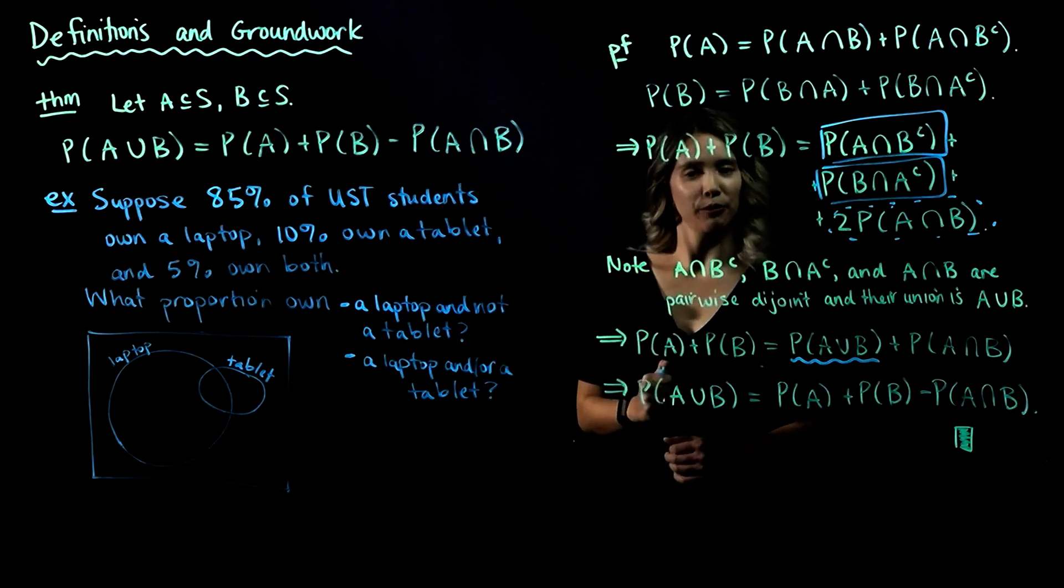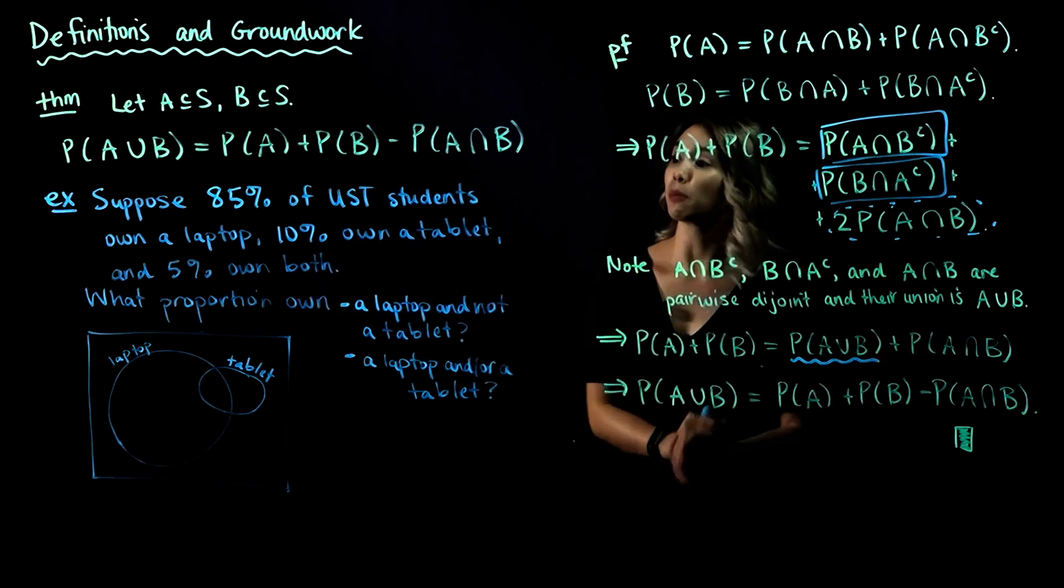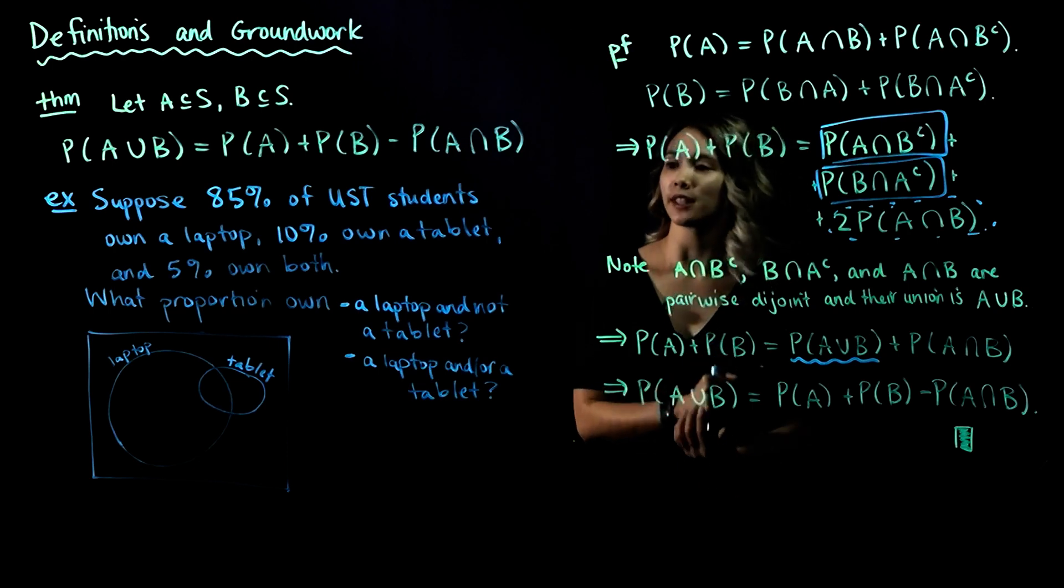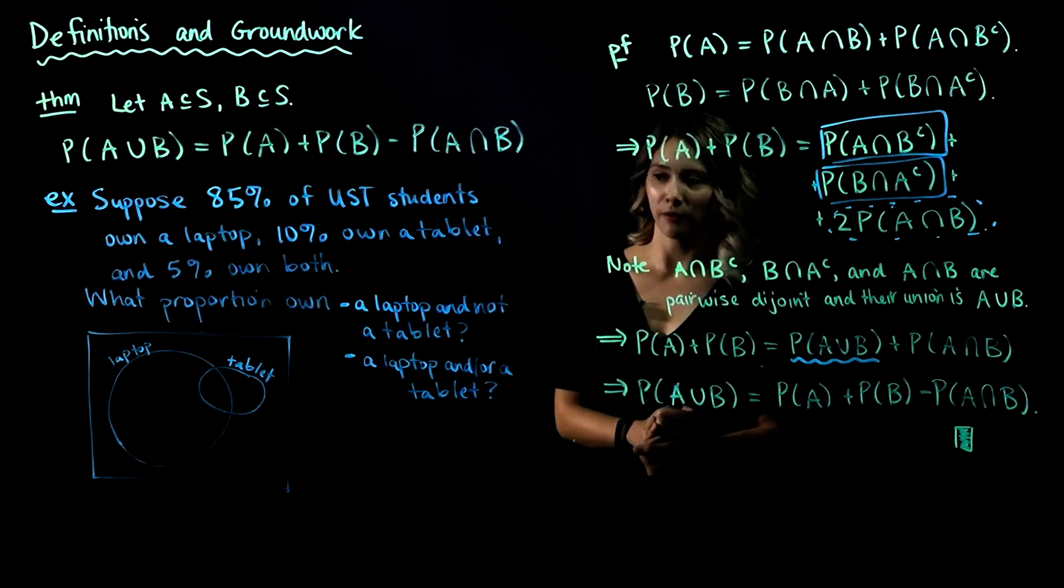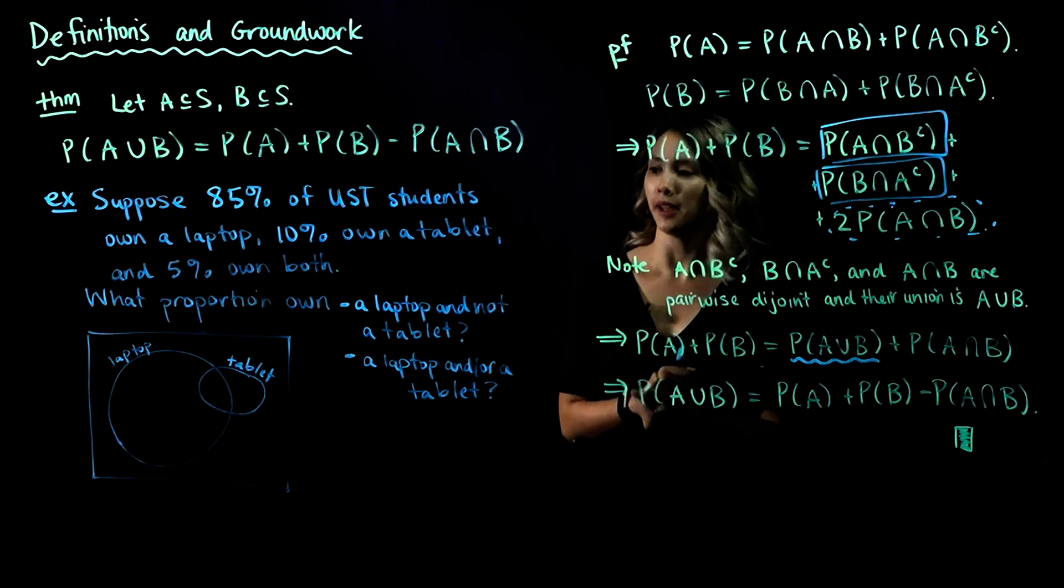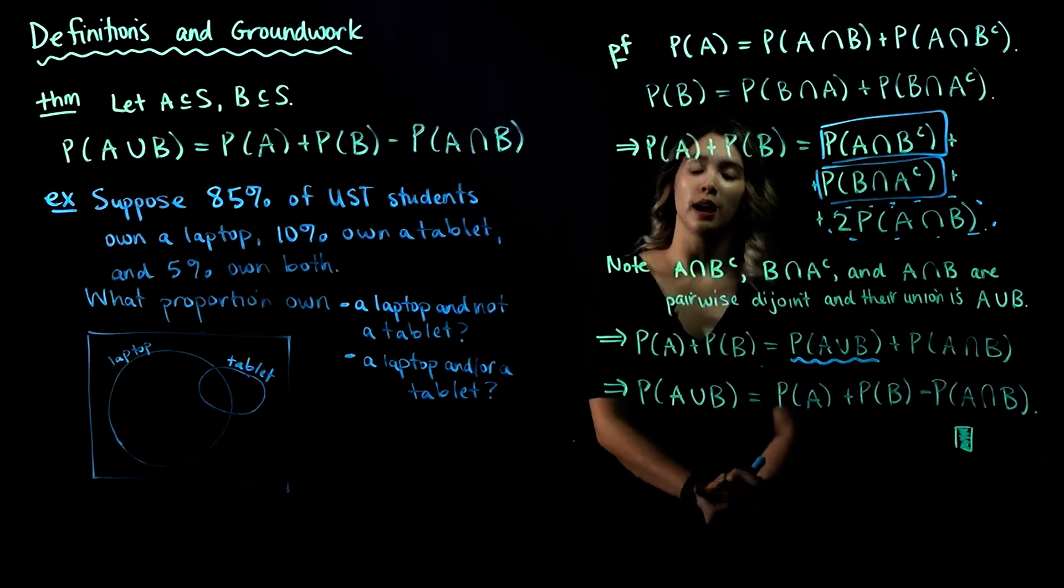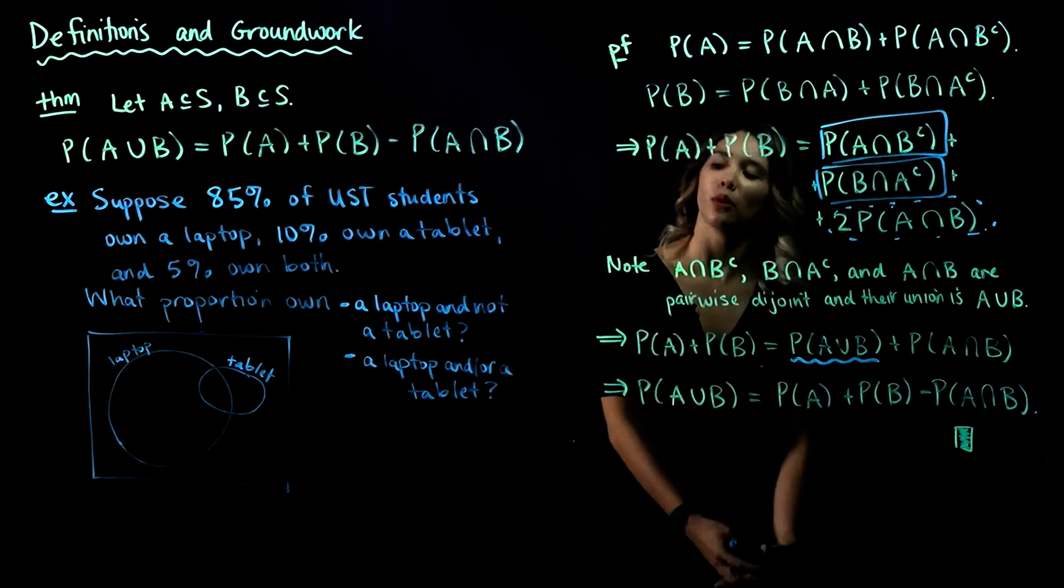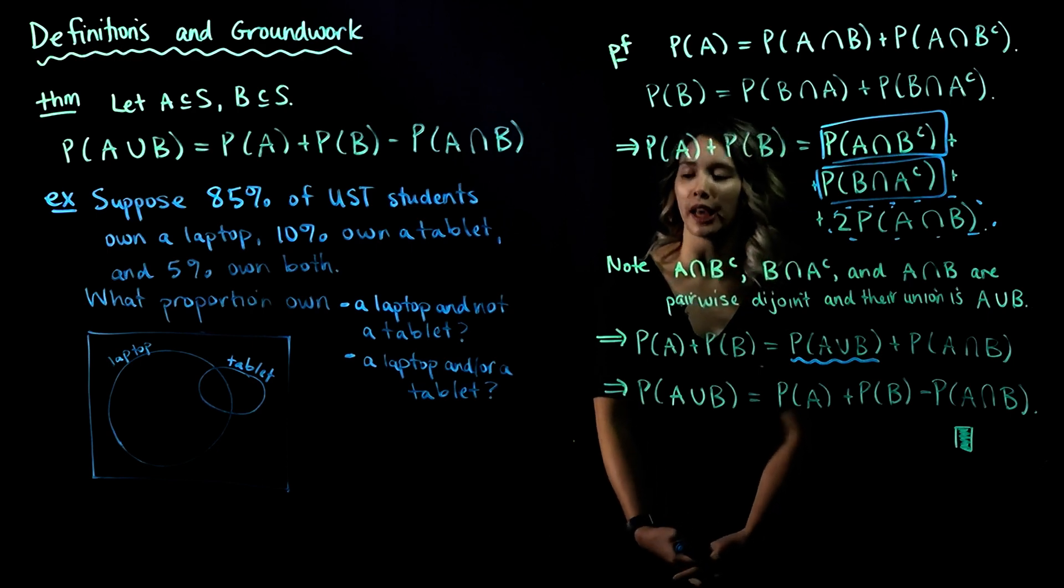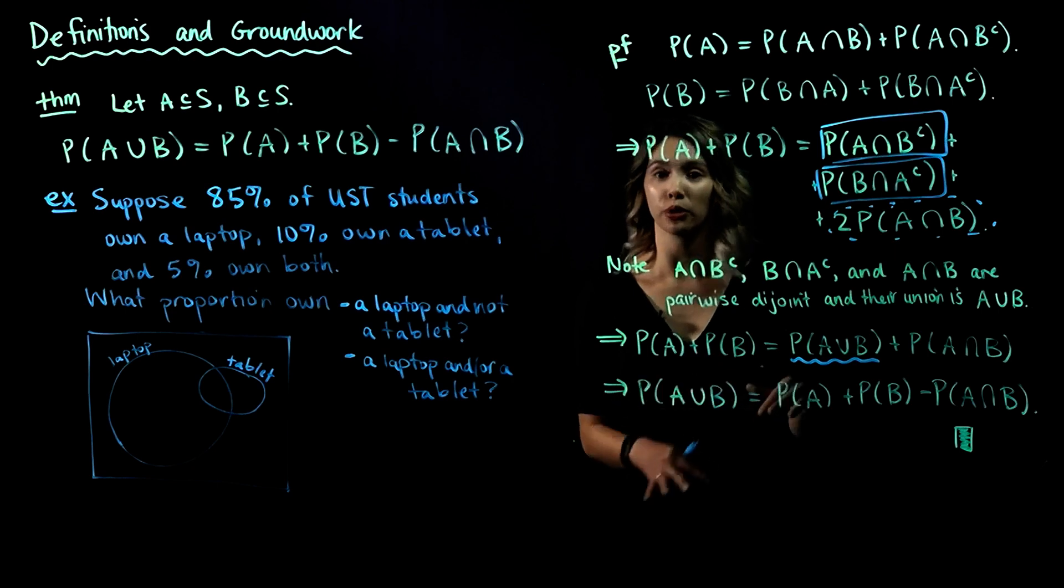So here's an example for you. I made these numbers up, so don't actually believe them, but suppose that 85% of University of St. Thomas students own a laptop, 10% own a tablet, and 5% own both a laptop and a tablet. Now we're wondering what proportion own a laptop and not a tablet, so just a laptop, and then what proportion own a laptop and or a tablet, so just like some kind of computer-y thing.